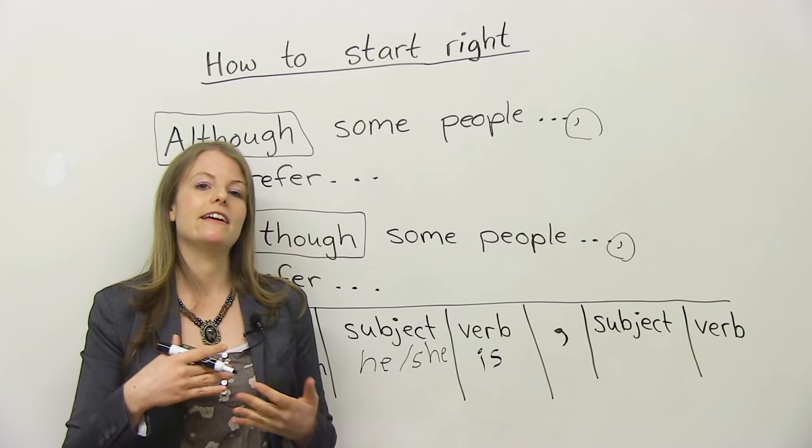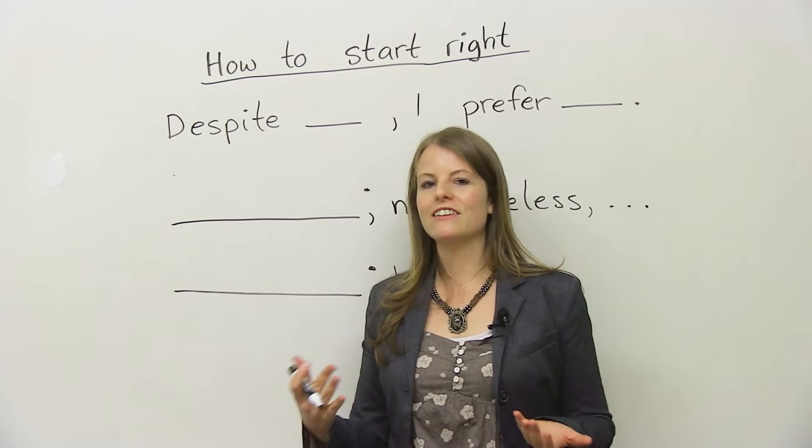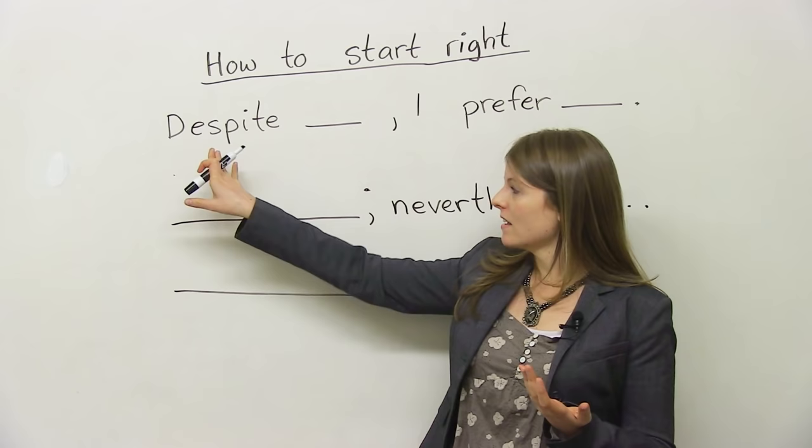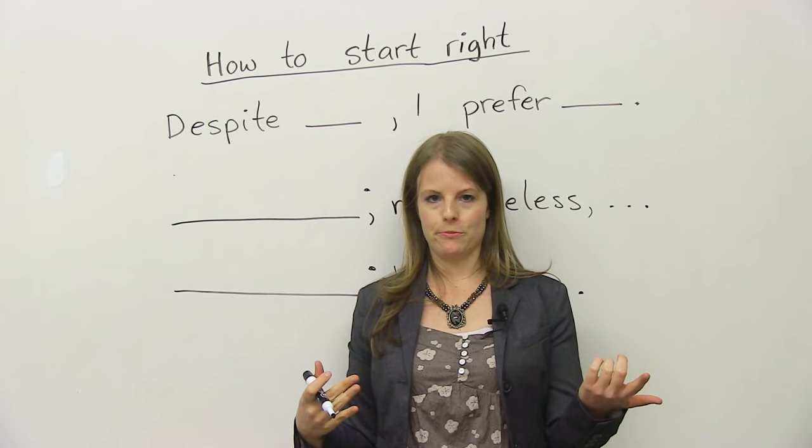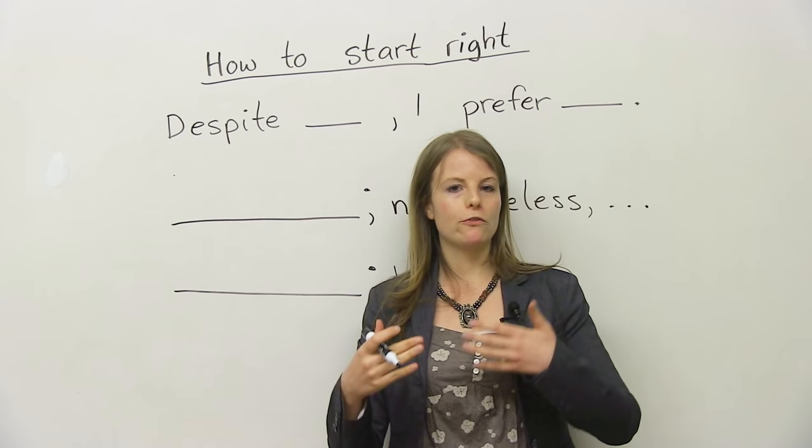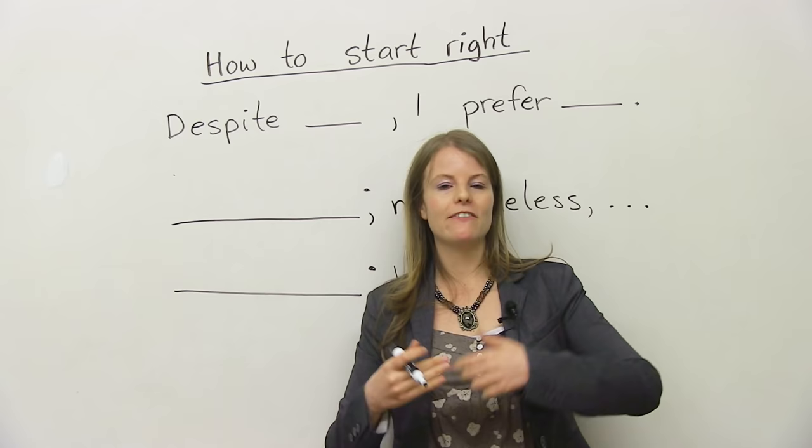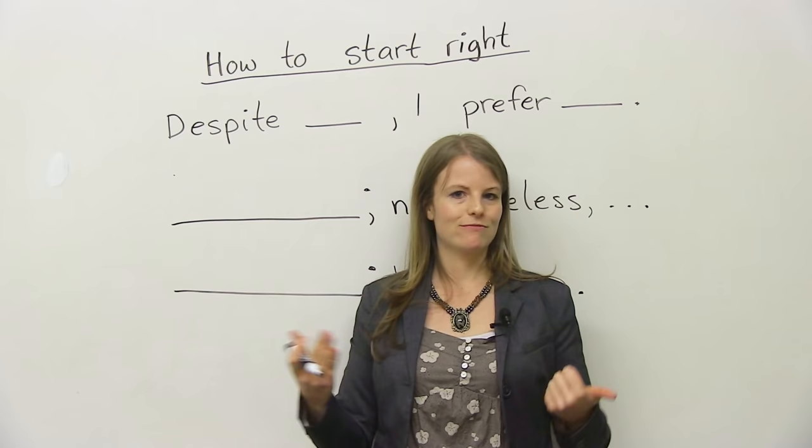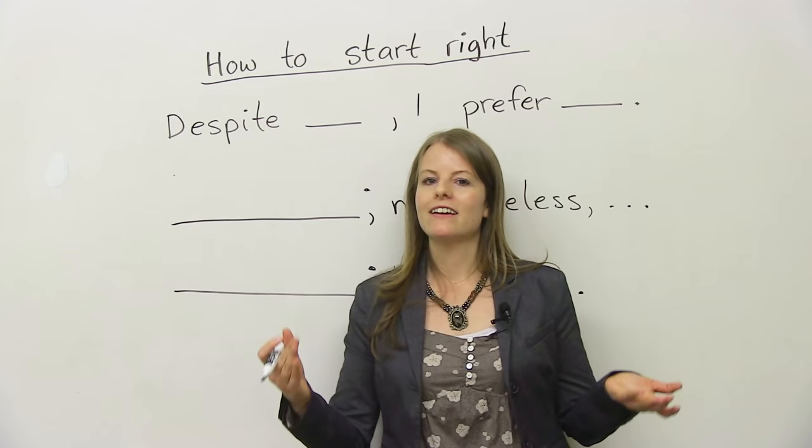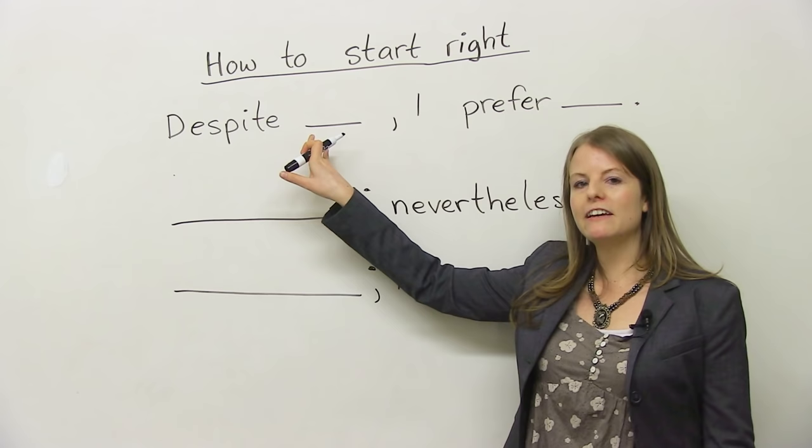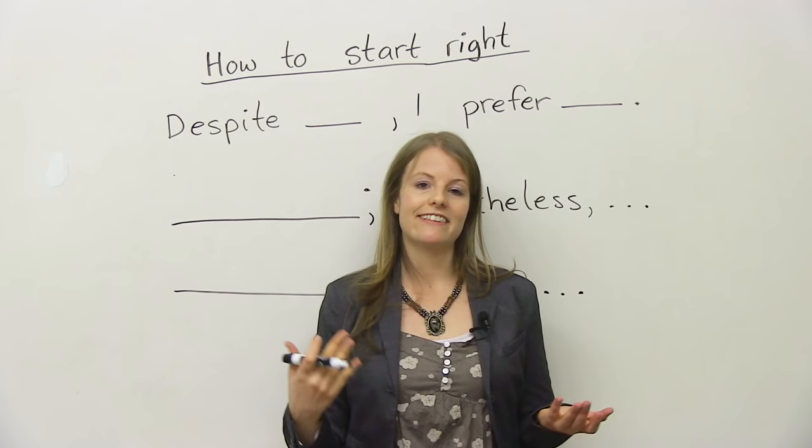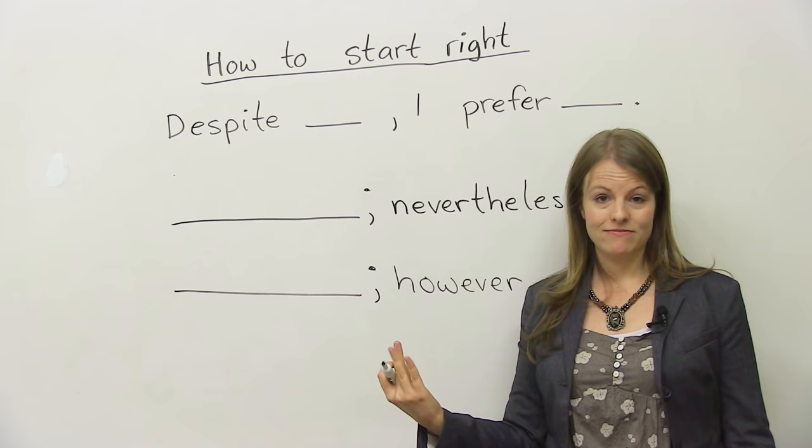So let's look at some more words that you can use to show the opposing side. We can use the word despite. Despite is very similar to although and even though. Imagine this. Imagine if I ask you if you would rather live in the city or in the countryside. Would you rather live in a big city or in a quiet town in the countryside? Which would you prefer? So imagine if you prefer the city. You might say something like, despite the advantages of living in the country, comma, I prefer living in the city.